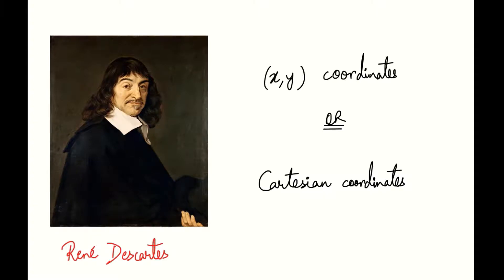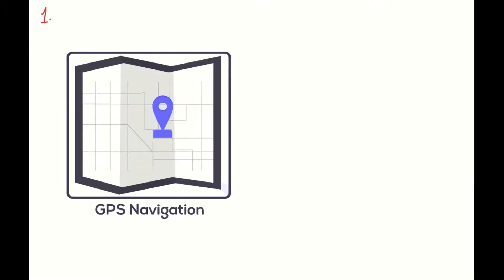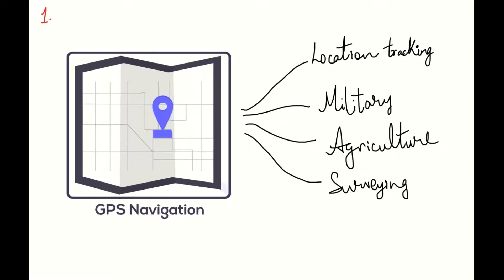Now, let us look at some applications. There are several applications of coordinate geometry. Firstly, it is used in GPS navigation, something that many of us use quite regularly. This, in turn, is applied to several more areas, such as location tracking while driving, use by the military for strategic purposes, and also in agriculture as well as surveying the geography of a region.